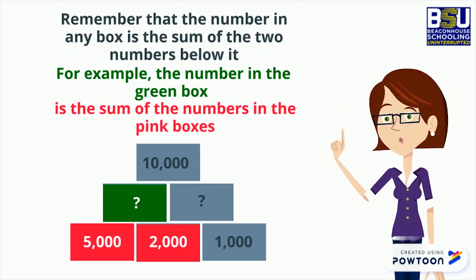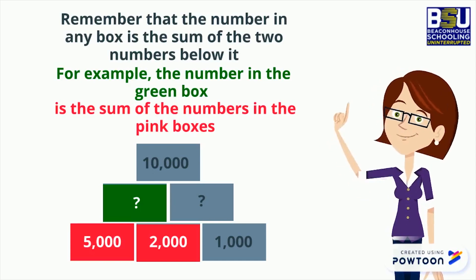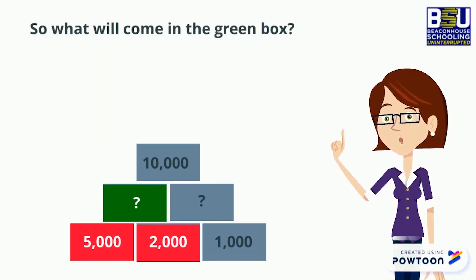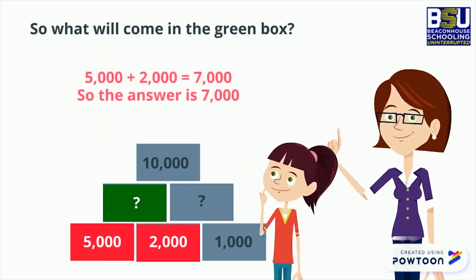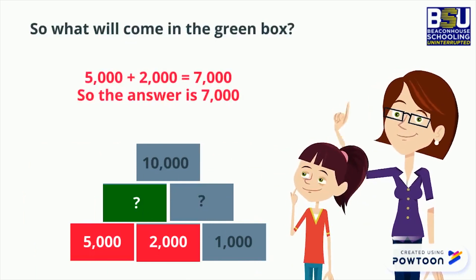So what will come in the green box? 5,000 plus 2,000 equals 7,000. So the answer is 7,000.